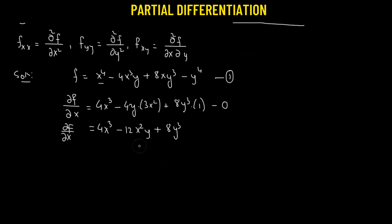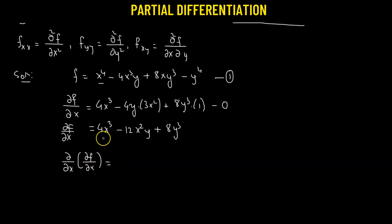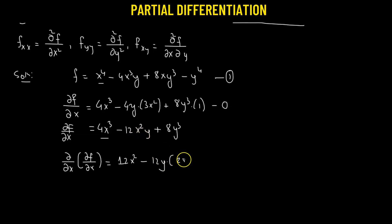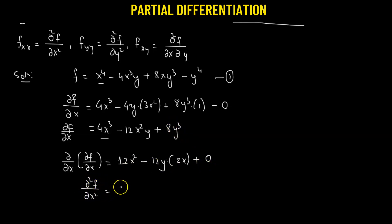Now we take the partial derivative on both sides again with respect to x. The partial with respect to x of the partial of f with respect to x equals: the partial of 4x cubed is 12x squared, minus 12y, which is a constant, multiplied by the partial derivative of x squared, which is 2x. The partial derivative of 8y cubed is 0. Therefore, the second partial derivative of f with respect to x is 12x squared minus 24xy.